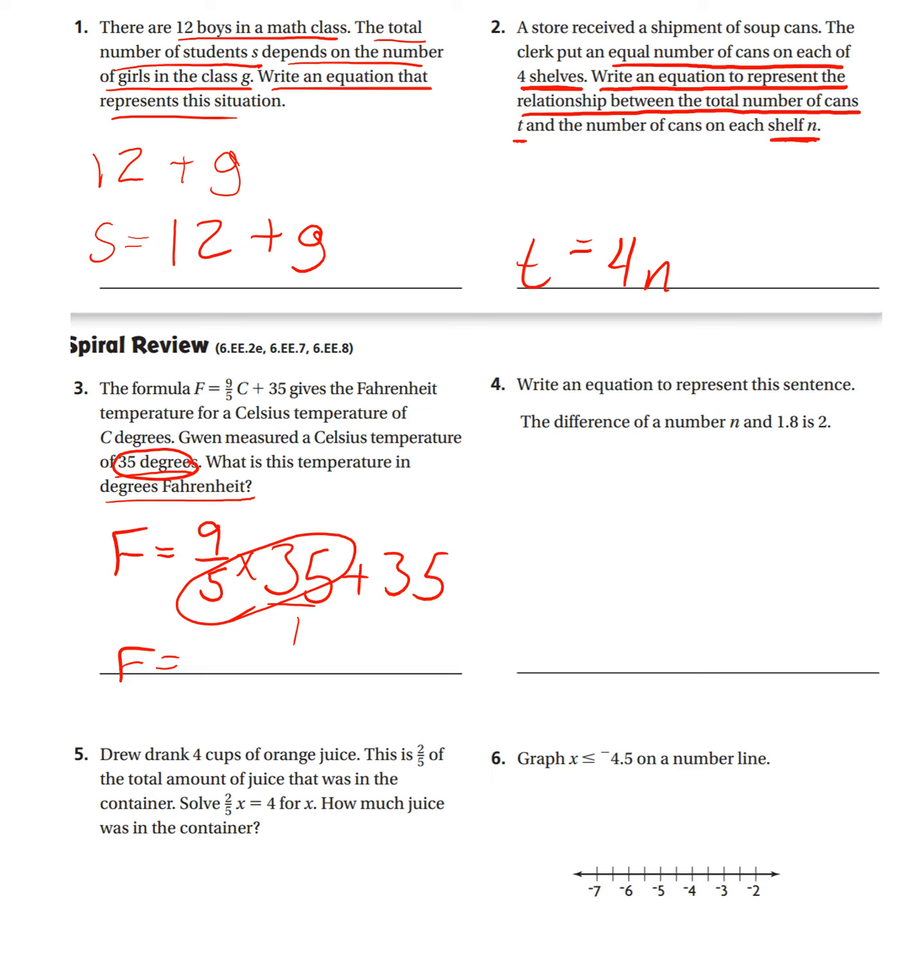Okay, let's work this out together. Write an equation to represent this sentence. The difference of a number n and 1.8. Difference tells me I'm going to be subtracting. What am I subtracting? n and 1.8 equals two. There's my equation.